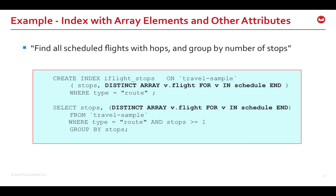This example creates a composite index with attributes in the array, such as v.flight where v is an array element, and a non-array attribute such as stops. The SELECT query finds all scheduled flights with one or more stops and groups the result by number of stops.